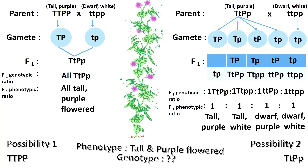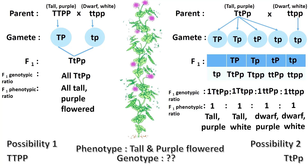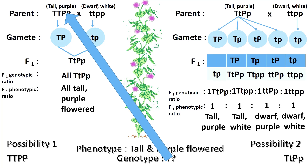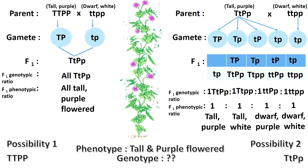If the mysterious individual is of this genotype, all of the offspring produced after test cross will be tall and purple flowered.